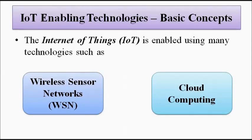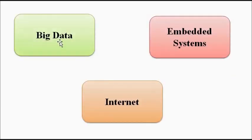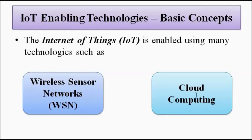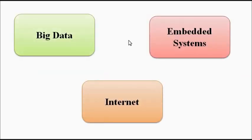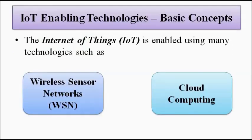The Internet of Things is made possible by using many technologies, and there are four key technologies involved which make this whole IoT system possible in a broad sense. First is wireless sensor networks, then we have cloud computing, then big data, embedded systems, and finally the internet which is necessary. These four key technologies — wireless sensor networks, cloud computing, big data, and embedded systems — are the basic building blocks of this IoT structure.